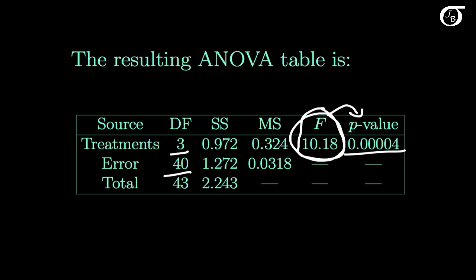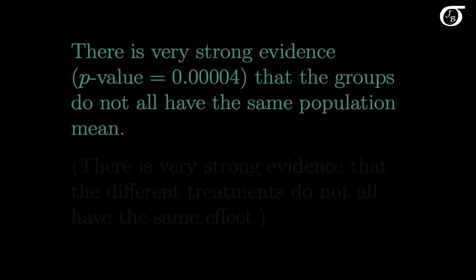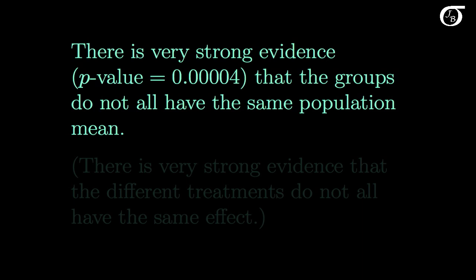What does that mean in the context of this experiment? That small of a p-value says that there is very strong evidence that the groups do not all have the same population mean.